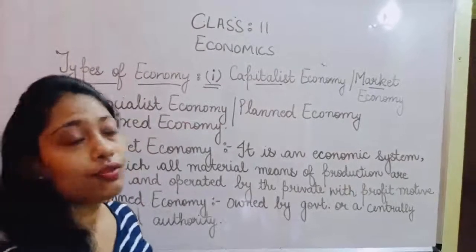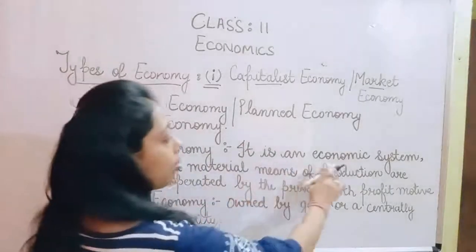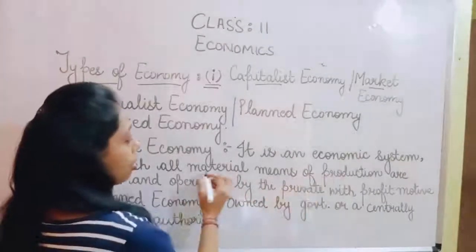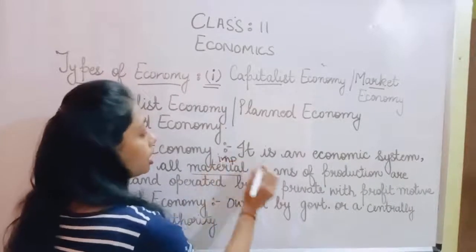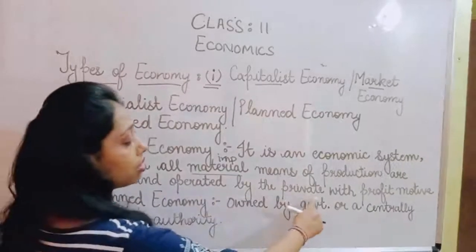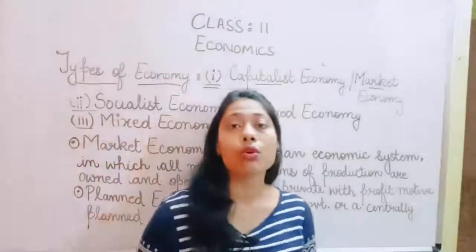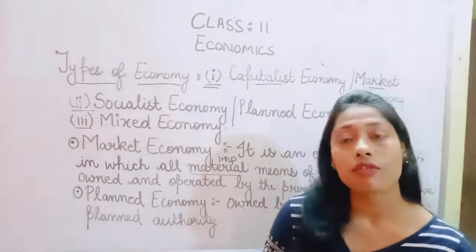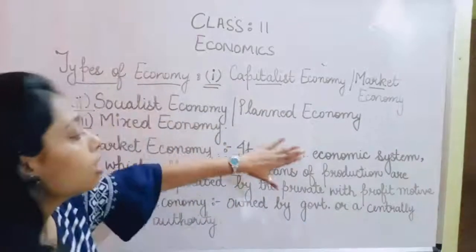First, let us find out what is a capitalist economy, that is, what is a market economy. It is an economic system in which all material means of production are owned and operated by the private sector with the profit motive. This economy is solely based on the motive of profit earning — not on the motive of social benefits, but the sole purpose is profit.